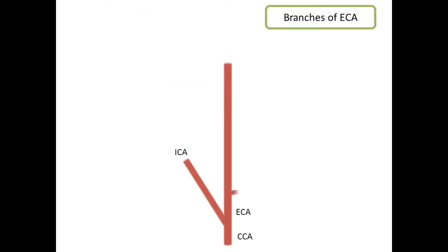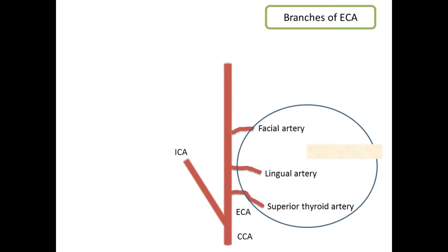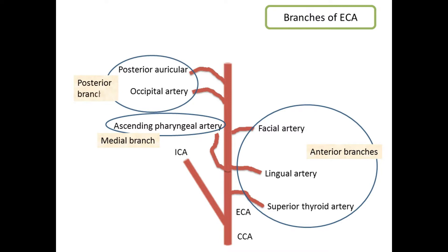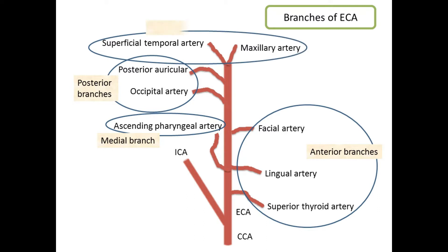The external carotid artery gives eight branches: superior thyroid artery, lingual artery, and facial artery — these three are the anterior branches. The ascending pharyngeal artery is the single most medial branch. The occipital artery and posterior auricular artery are the posterior branches. The superficial temporal artery and maxillary artery are the terminal branches.